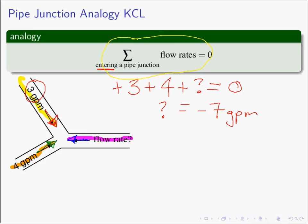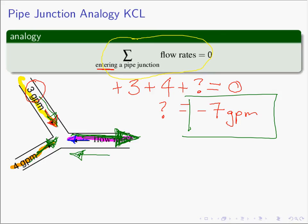This is completely intuitive. If three gallons per minute go one direction and four gallons per minute enter another way, there had better be seven gallons per minute going in the other direction — otherwise we lose sewage under the house. We asked for the flow rate going to the left, and the flow rate to the left is simply the negative of the flow rate to the right. The answer is negative seven gallons per minute flowing to the left.